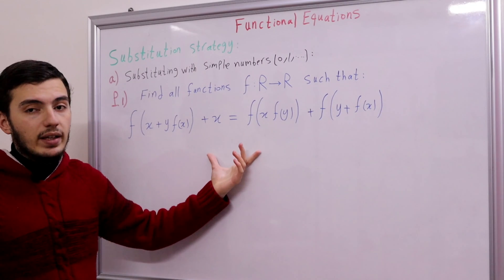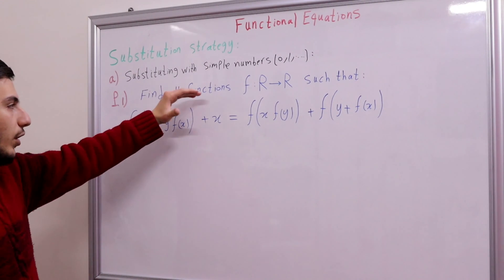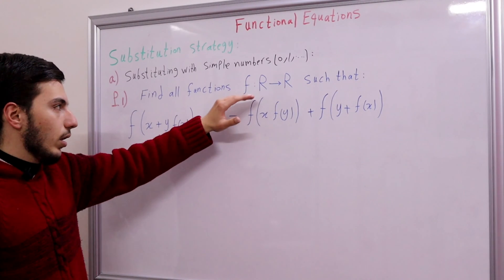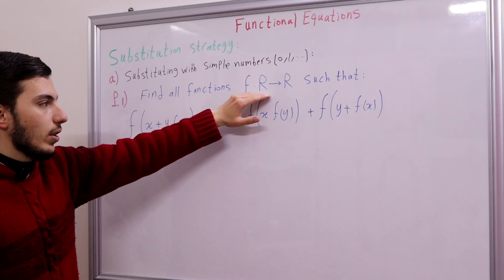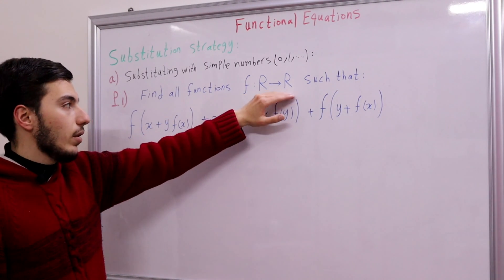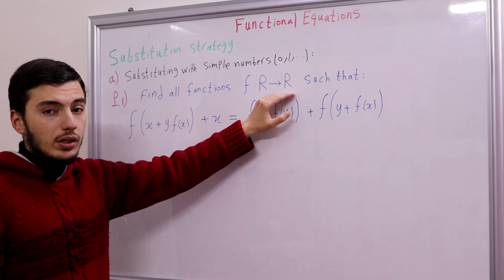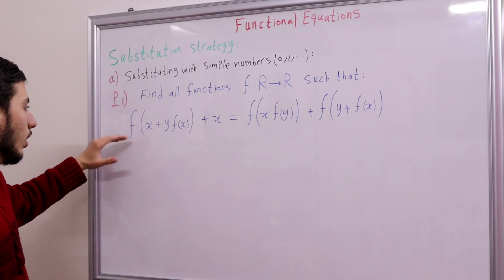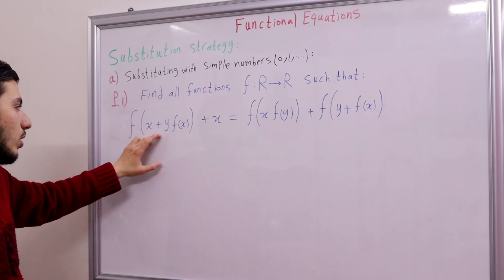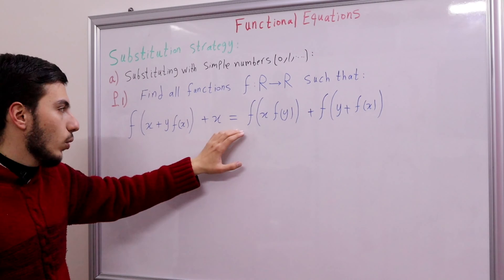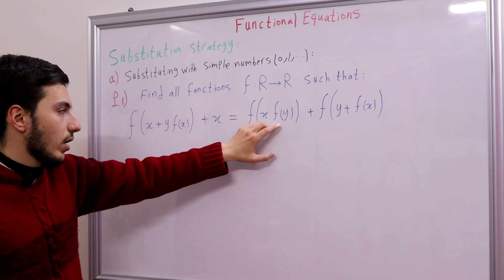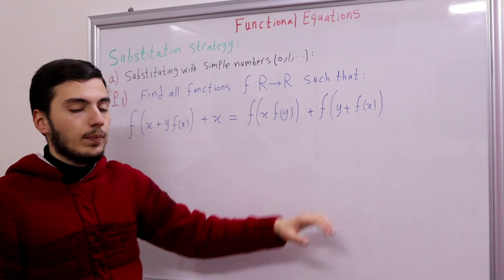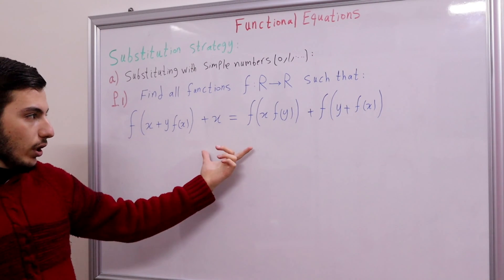The first problem we'll be looking at is the following: find all functions f from ℝ to ℝ — the domain is the set of all real numbers and the range is also the set of all real numbers — such that the functional equation is: f(x + y·f(x) + x) = f(x)·f(y) + f(y) + f(x).